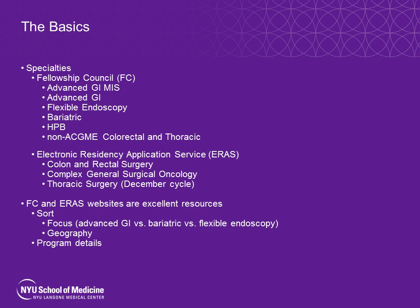Be sure to keep this in mind. Both the Fellowship Council and ERAS websites are excellent resources, and you can sort through individual programs based on multiple criteria, including whether the fellowship is advanced GI versus bariatric versus flexible surgical endoscopic, and also by geographic location, normally by state. These websites also offer detailed information about the faculty, case volume and variety, affiliated hospitals, academic activity, and outpatient experience involved in the fellowship.